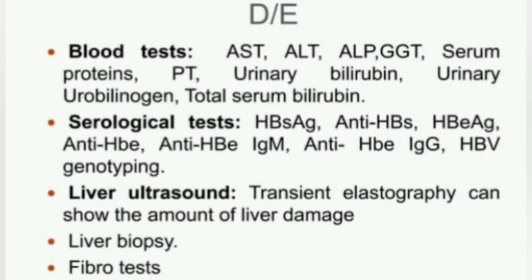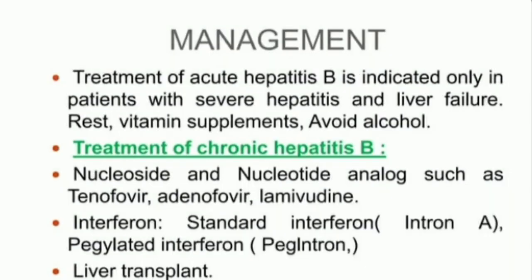Diagnosis and etiology via blood tests include: aspartate transaminase (AST), alkaline phosphatase (ALP), gamma-glutamyl transferase (GGT), serum protein, PT, urinary bilirubin, total bilirubin, serological tests including HBsAg, and other markers.